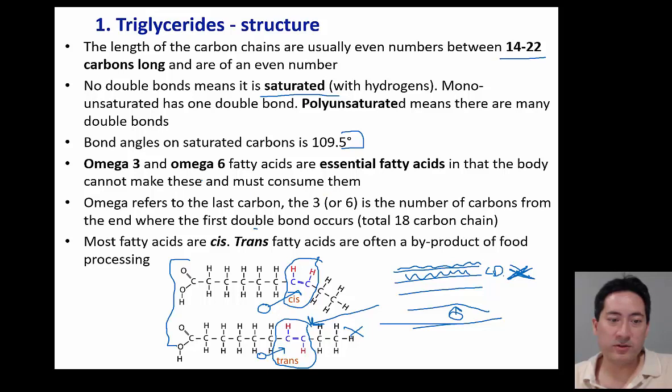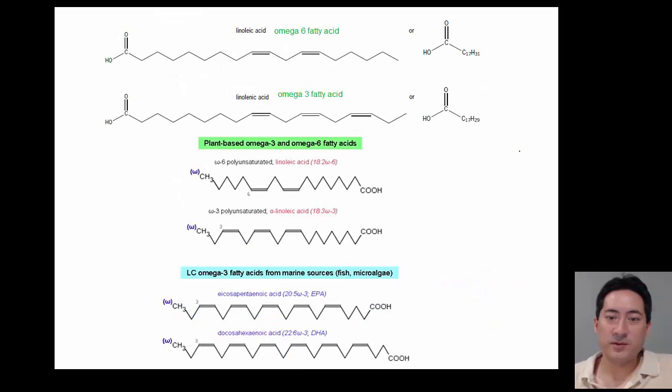Just a little bit more detail there. 109.5, that's tetrahedral. There are certain fatty acids we can't make, omega-3 and 6. That refers to the number of carbons from the end where the first double bond occurs. Just to be curious, I have got some of those. That's the carbon on, third carbon on, there's a double bond there.